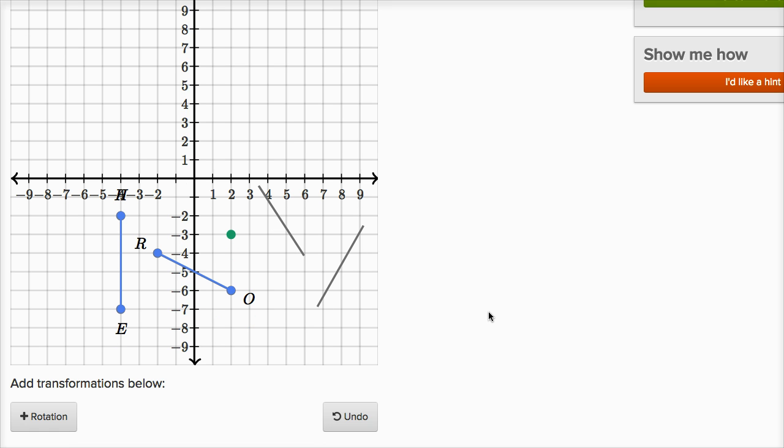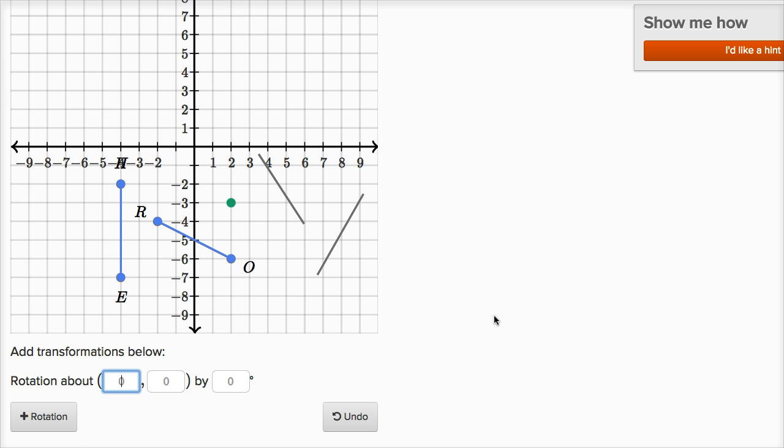Well, actually, let me just play around. I can add a rotation here, and let's see. We already know we're going to rotate around the point (2, -3), so let me write that. We're going to rotate around the point (2, -3). Let's see, if we rotate by 90 degrees, what happens?